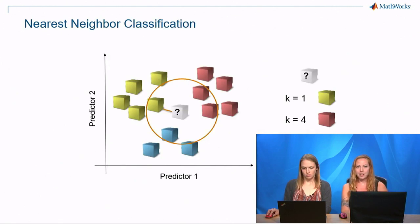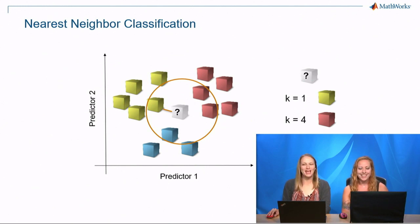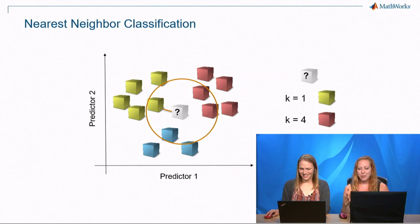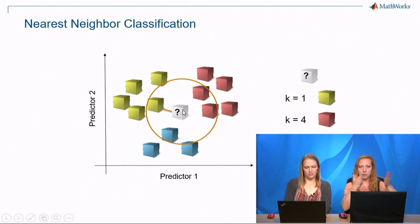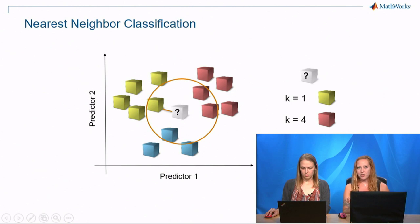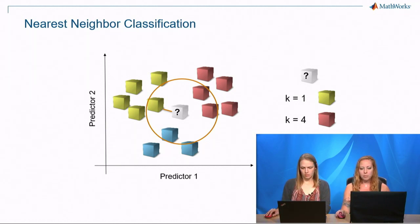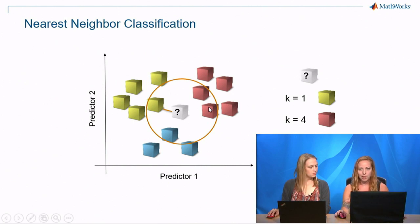I'll start with the easiest one: nearest neighbor. Nearest neighbor is the easiest to explain — it's just doing a bunch of distance calculations. It takes a new data point and says: how close am I to the points in the classes? It compares to all of them and goes for that. You can change the k — how many neighbors it's going to consider. One is probably going to give you a lot of noise, but if you broaden it out, say k equals four, it's more likely to be classified as a nearby class. You also have a bunch of options for the distance measurements.